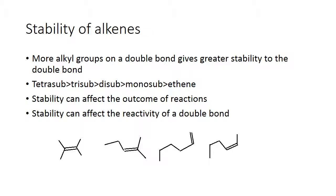We're going to talk about the stability of alkenes. Molecules will have different levels of stability. The higher the stability, the more resistant that compound is to undergoing a reaction, and the more likely it is going to be formed in a reaction where there is more than one possible outcome. So we're going to talk about alkene stability — what is the more stable alkene, how we decide that, and then we'll talk about why this comes about.